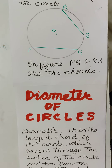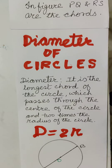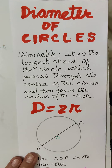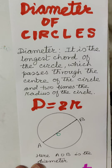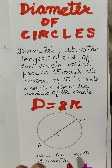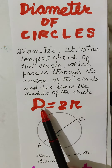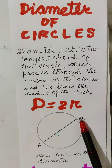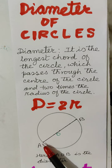Diameter of the circle: the diameter is the largest chord of the circle which passes through the center. It equals two times the radius — so AOB is the diameter, d = 2r. OA is r and OB is also r, so AB equals r plus r, which is 2r.